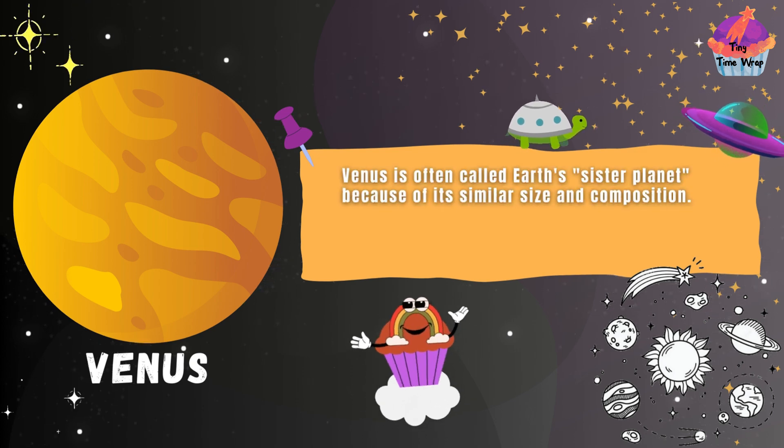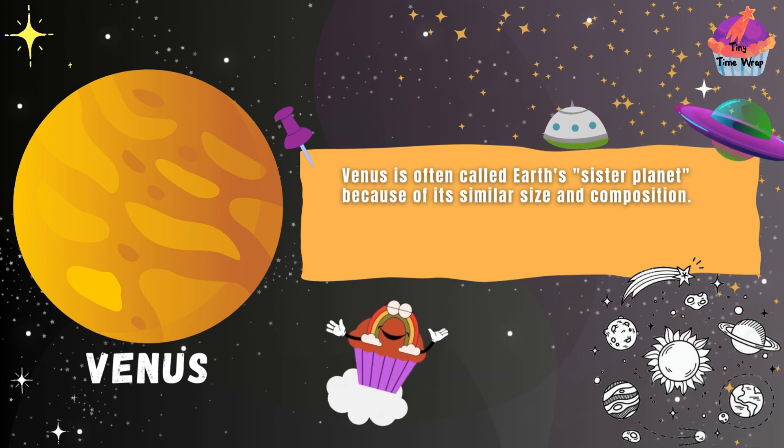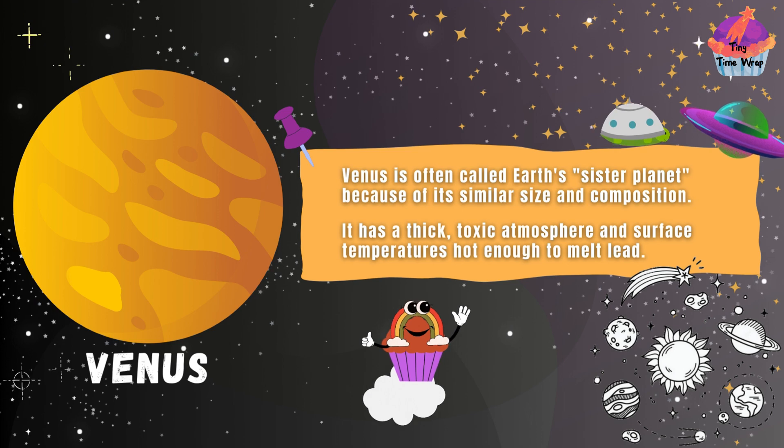Venus is often called Earth's sister planet because of its similar size and composition. It has a thick, toxic atmosphere and surface temperatures hot enough to melt lead.